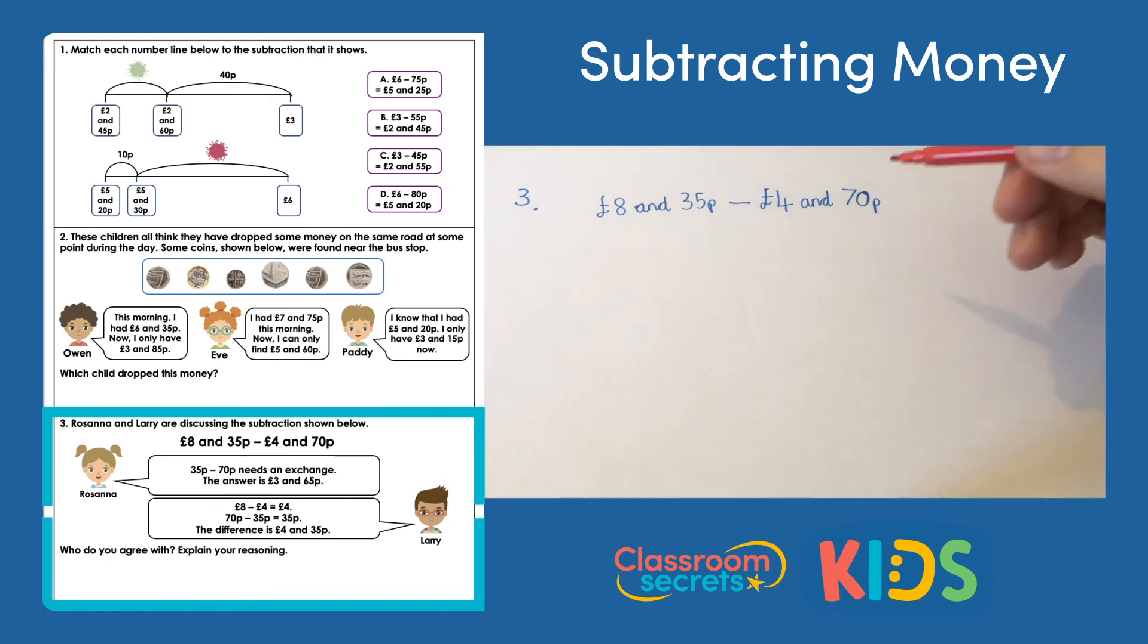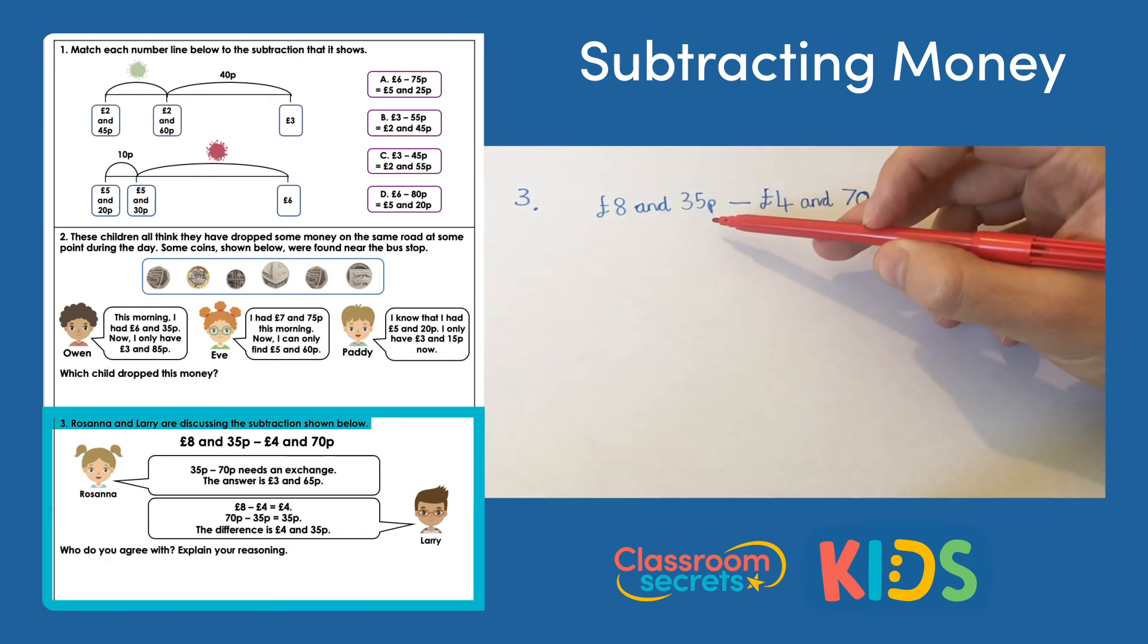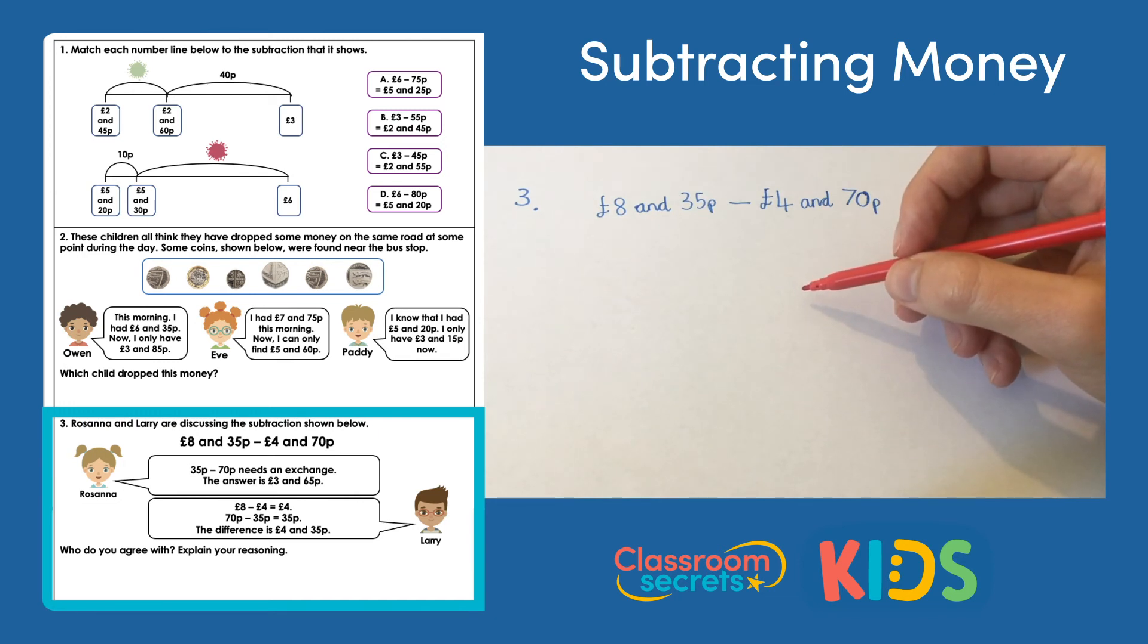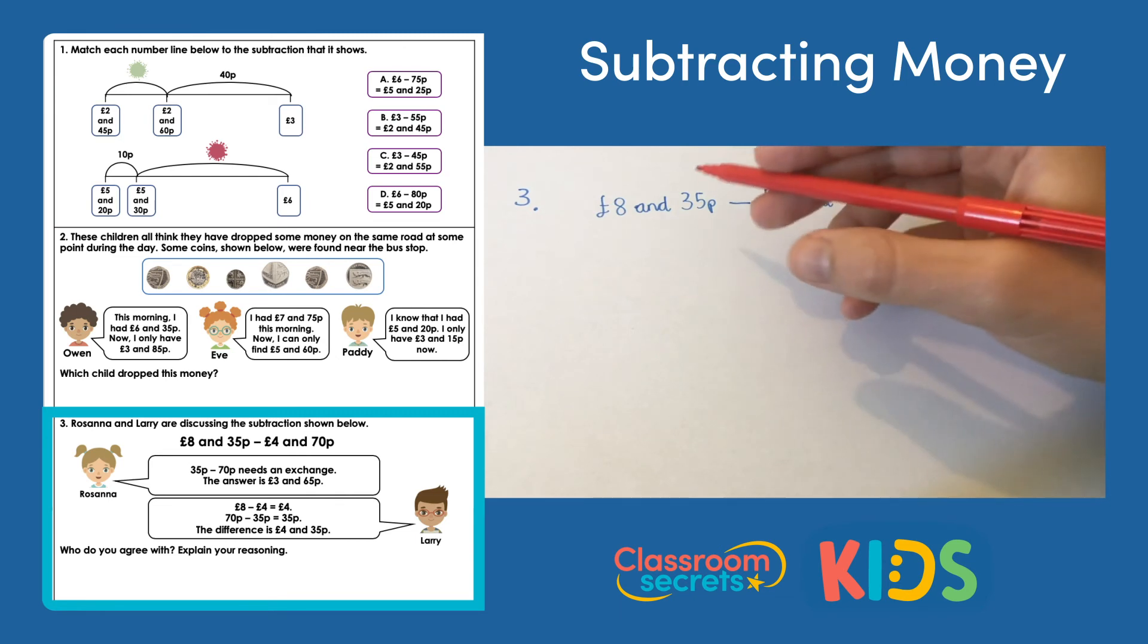Question three then. Rosanna and Larry are discussing the subtraction here: eight pounds and 35 pence take away four pounds and 70 pence. Who is correct, Rosanna or Larry? So Rosanna thinks 35p take away 70p needs an exchange and she thinks the answer is three pounds and 65 pence, whereas Larry thinks it's four pounds and 35 pence. Let's have a look.